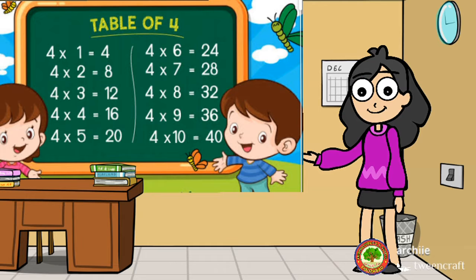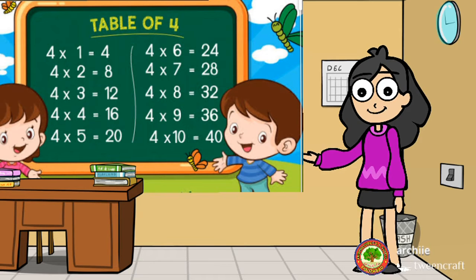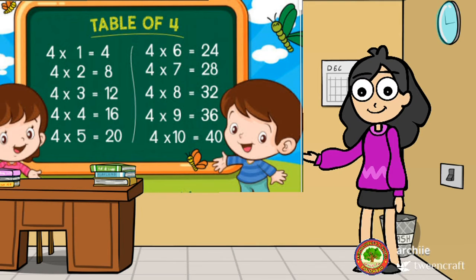Say, 4 ones are 4, 4 twos are 8, 4 threes are 12, 4 fours are 16, 4 fives are 20,